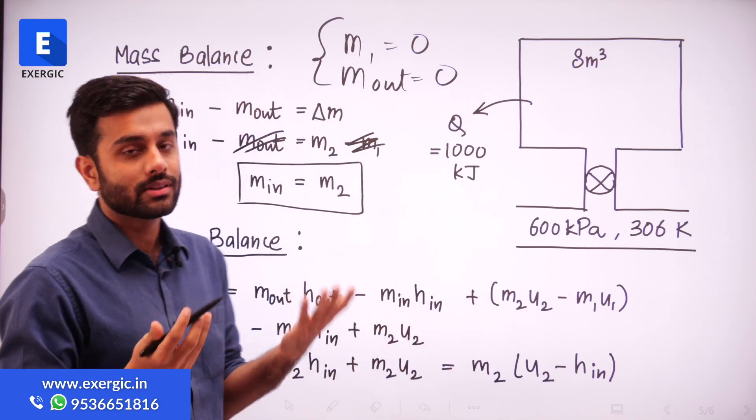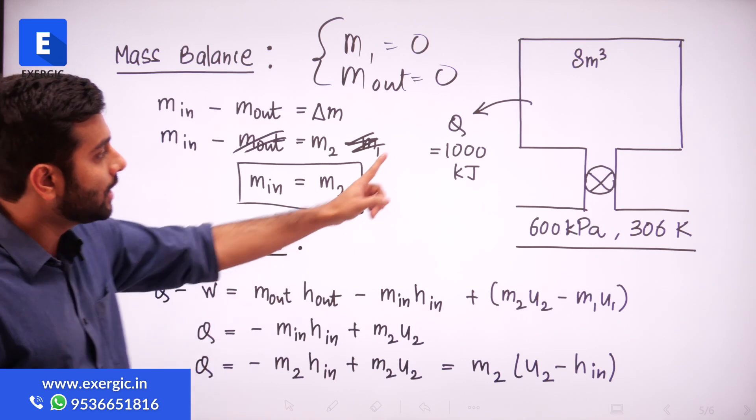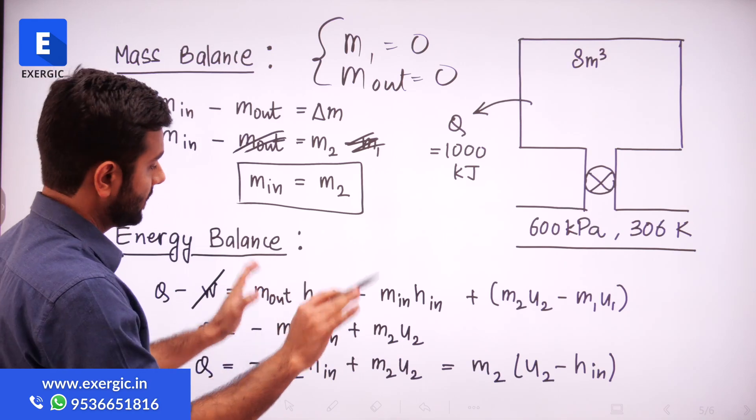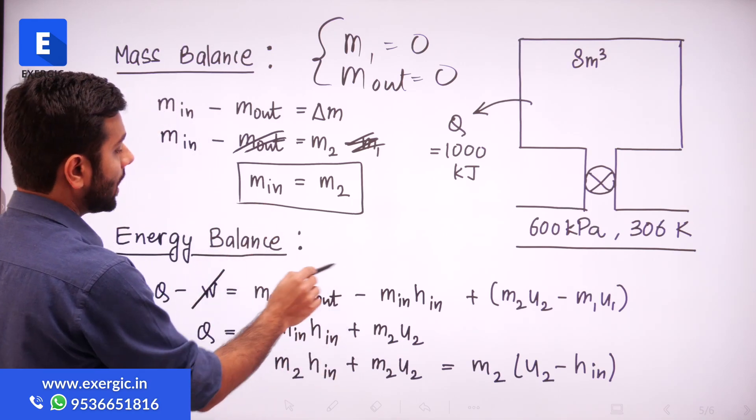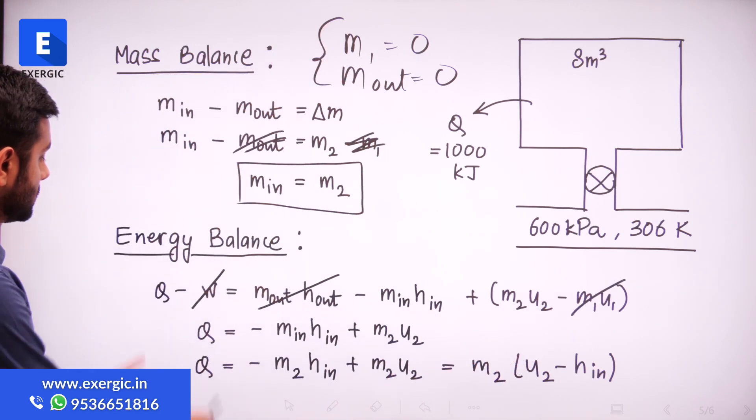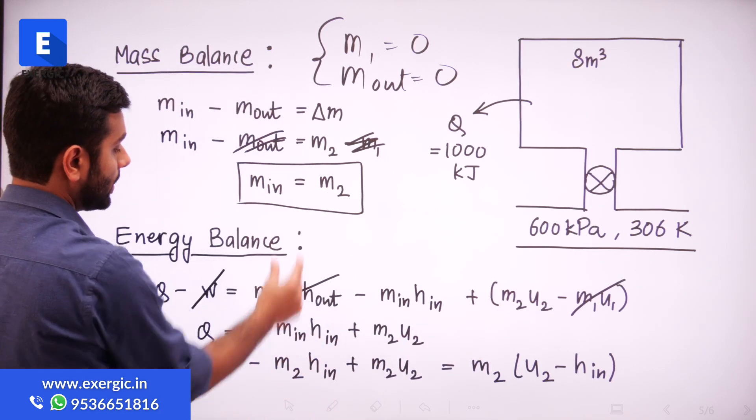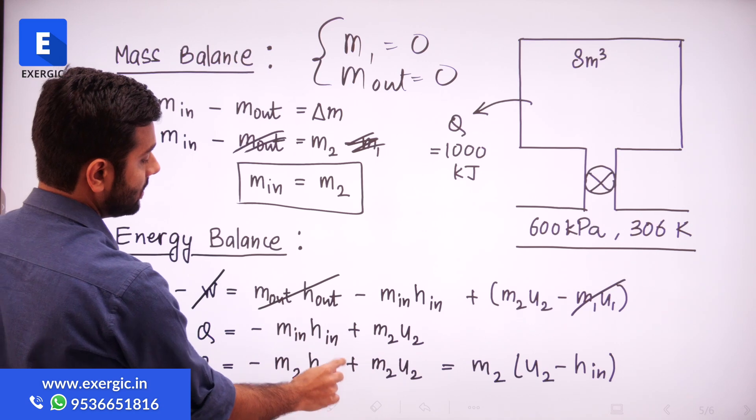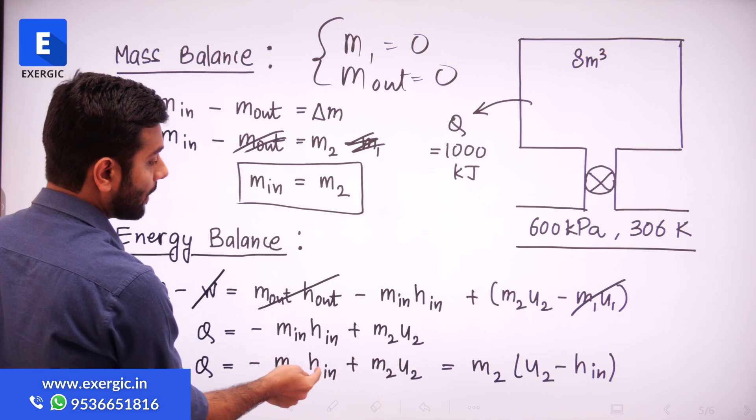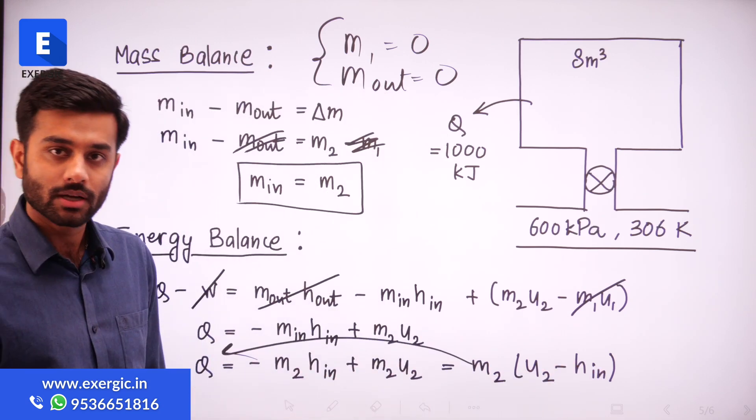In the SFE equation, whenever we write the expression of Q, it is considered as an input in the standard equation. But here, Q is the output. So this Q will be coming with a minus sign. Ultimately, when we put the value, we will put minus 1000. Work is not here. Kinetic energy, potential energy, we have neglected, nothing mentioned. M_out is 0. M₁ is 0. Already we have written the condition. So Q is equal to minus M_in H_in plus M₂ U₂. M_in is equal to M₂. So we have written that M₂ H_in with a minus sign plus M₂ U₂. M₂ we can take out as common. So we will get U₂ minus H_in. So this is the expression for Q.